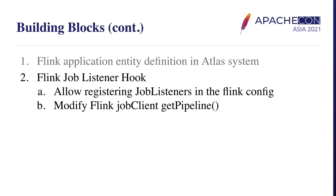Here on this slide is the current schema we have contributed to the Atlas upstream. At the initial version, the Flink application entity has six attributes. First is ID, which is automatically generated by Atlas. Start time and end time are both self-explanatory. Config is a map-type structure. Input and output is a list, which is essentially Flink source and sink. The Flink application entity is just like a database schema and will evolve over time; this definition is what we have contributed so far.